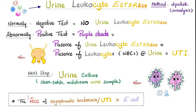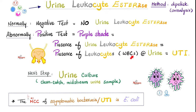Urine leukocyte esterase — what's the method? Urine dipstick. This is part of urinalysis. Normally, you should have no urine leukocyte esterase; that's a negative test. Abnormally, the positive test — and by the way, positive is a good thing everywhere except inside the hospital, where positive is a bad thing. If you see a purple shade, it means the presence of urine leukocyte esterase, which means the presence of white blood cells, which means this patient probably has a urinary tract infection.